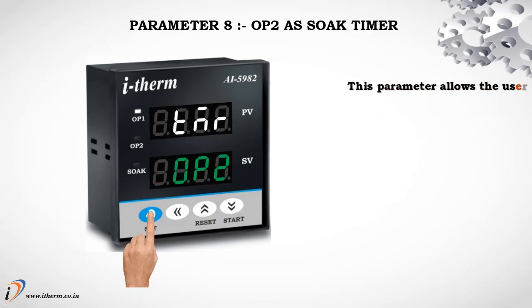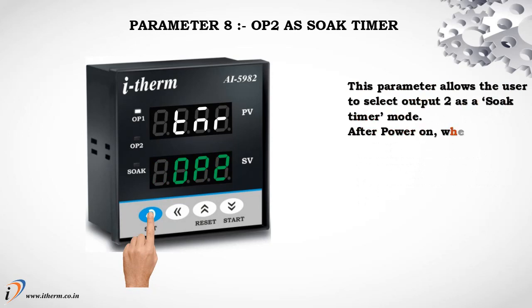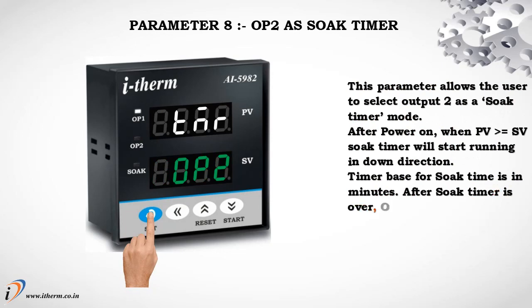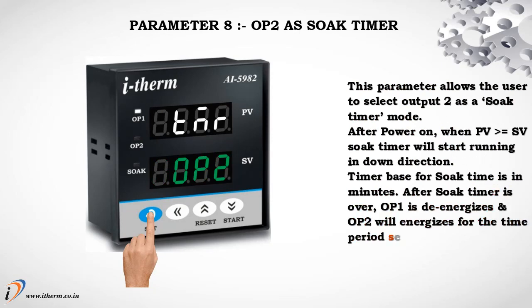Parameter 8: Output 2 as Soak Timer. This parameter allows the user to select output 2 as Soak Timer mode. After power on, when process value is greater than or equal to the set value, the Soak Timer will start running in the down direction. Timer base for Soak Timer is in minutes. After the Soak Timer is over, output 1 de-energizes and output 2 energizes for the time period set via Soak Timer delay.